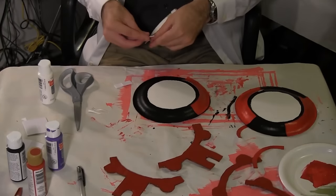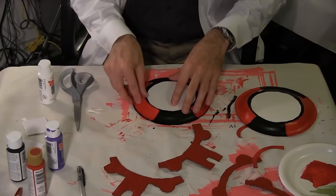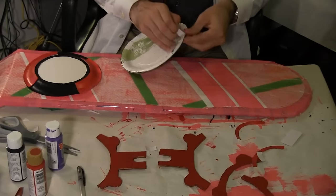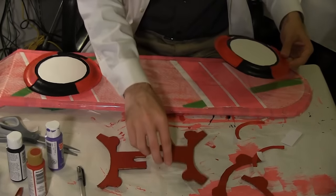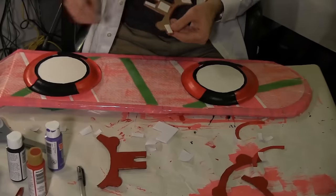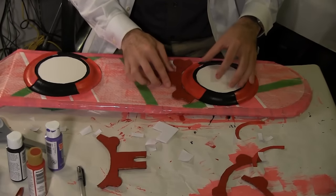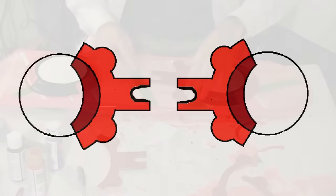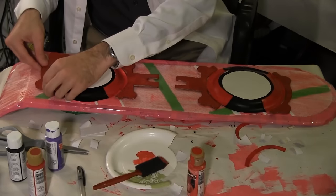Use adhesive foam squares to attach the red side pieces to the black rimmed paper plates. Cut foam squares in half and use them to attach the paper plates over the pink stripes on the hoverboard. Use adhesive foam squares to attach the cardboard red pieces between the paper plates as shown. Place the outer red cardboard pieces as shown.